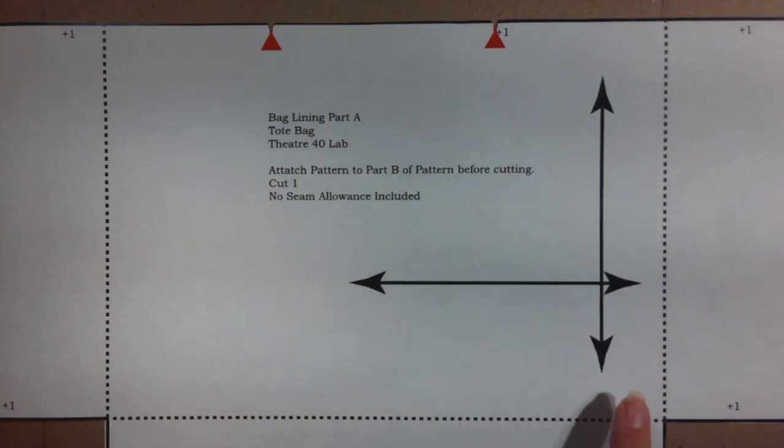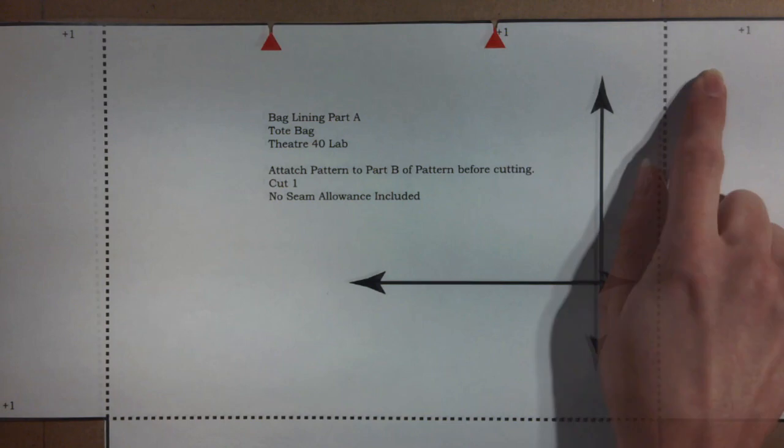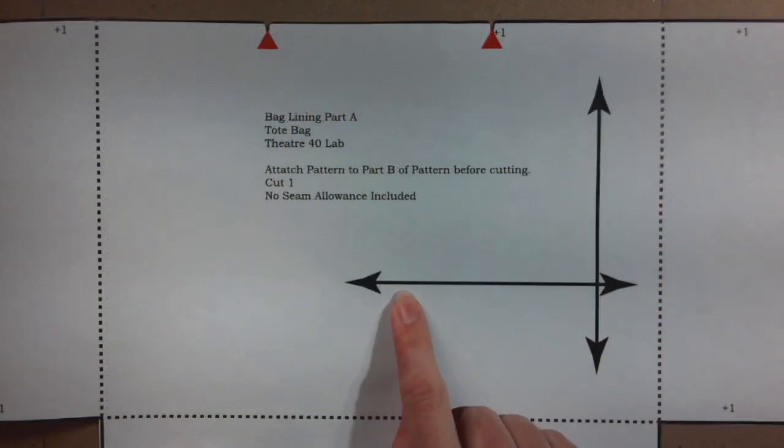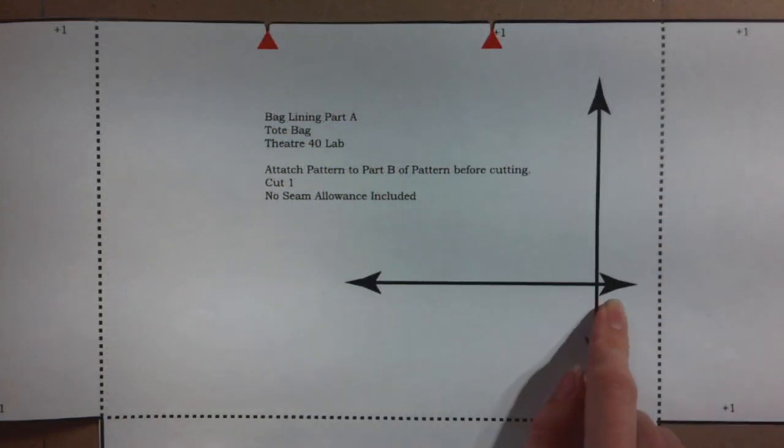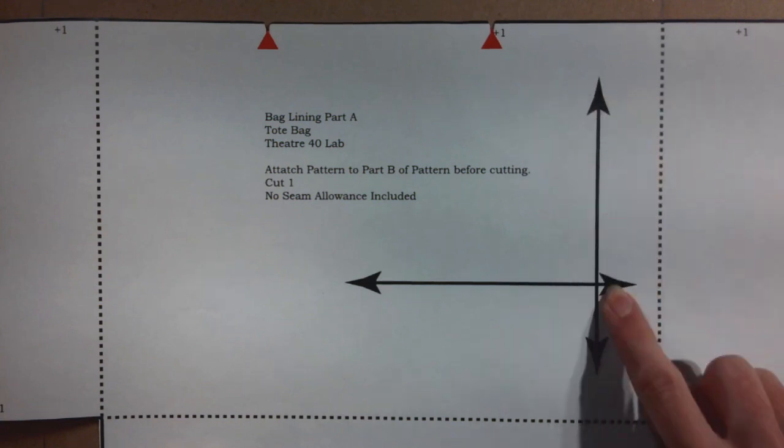The amount that should be added is listed on each edge. Plus one means to add one inch of seam allowance along that edge. The line with arrows at both ends is a grain line. This is important to help you line up the pattern with the grain of the fabric so that the project looks its best.